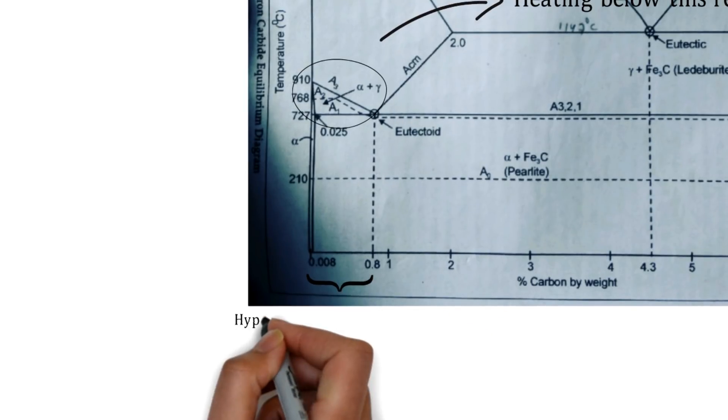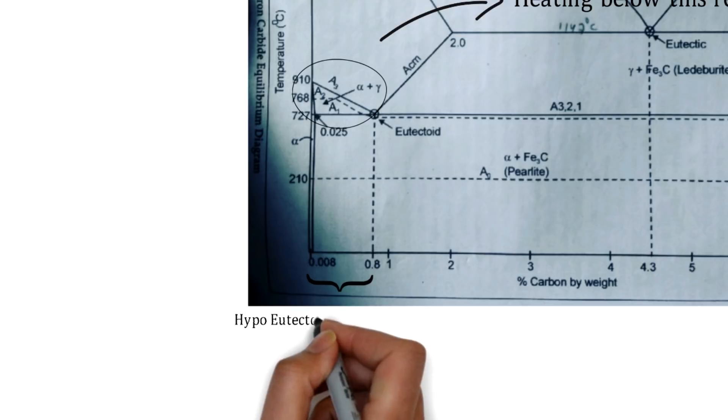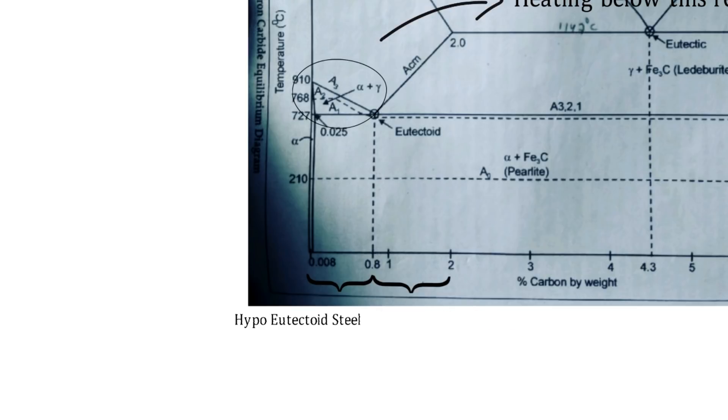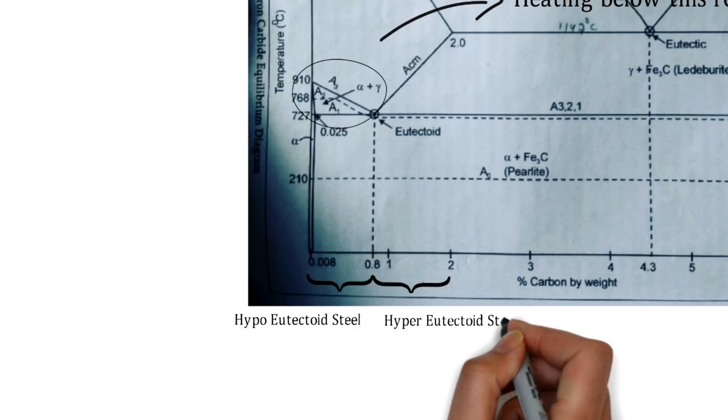This temperature I have shown over here. First of all, hypo eutectoid is having percentage of carbon that is up to 0.8 percent. From 0.8 percent up to 2 percent, that is hyper eutectoid steels.